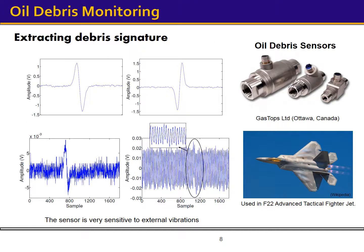Another very powerful means for condition monitoring is the oil debris sensor. This sensor is placed on the lubricating oil line of a mechanical system. Without any external disturbances, two well-balanced opposing magnetic fields cancel each other within the sensor pipeline. However, as a metallic particle passes through the sensor, this balance is disturbed, and its signature, similar to those shown in the top two figures, is generated.